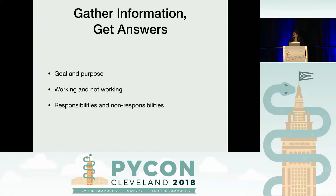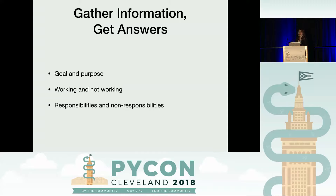What I did was come into the team, observe a lot of the team meetings, see a couple of sprint cycles they went through, and understand their current state of normal process. Then I set up one-on-ones and individual conversations to get information from the team as well as people outside of the team. As I gathered enough data, I started forming my own opinions around core areas: what is the goal and purpose I see for the team, what is working and what is not working, and what are the responsibilities and non-responsibilities of the team.